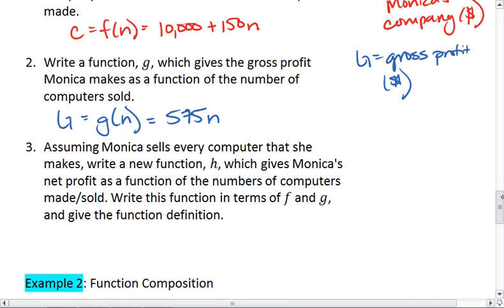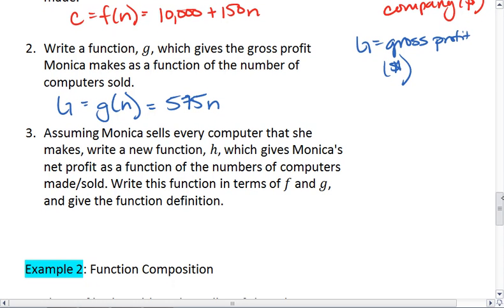Lastly, assuming Monica sells every computer that she makes, write a new function h, which gives Monica's net profit. So p will be net profit in dollars as a function of the number of computers sold. Write this function in terms of f and g, and give the function definition.